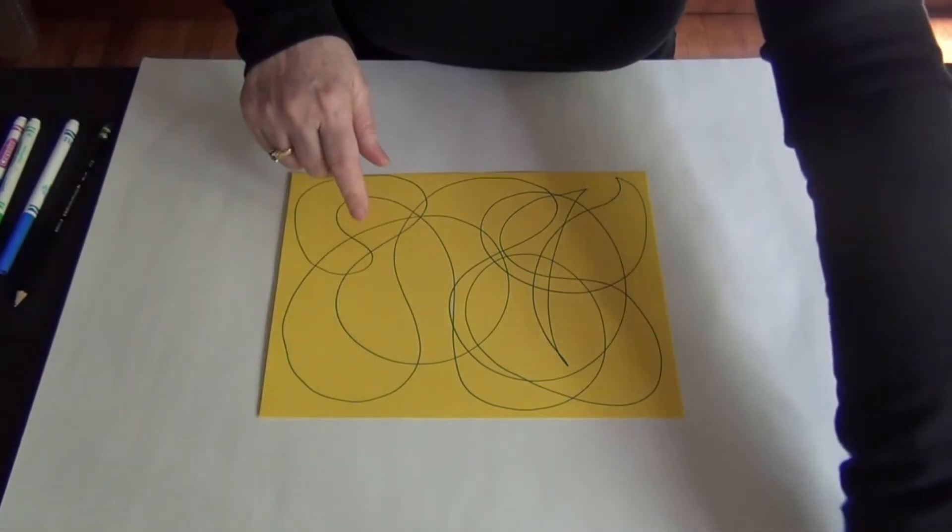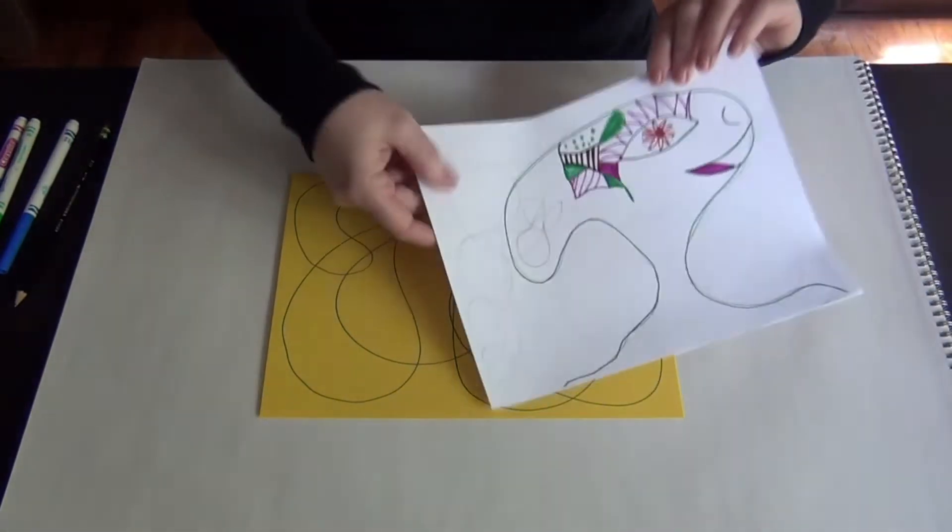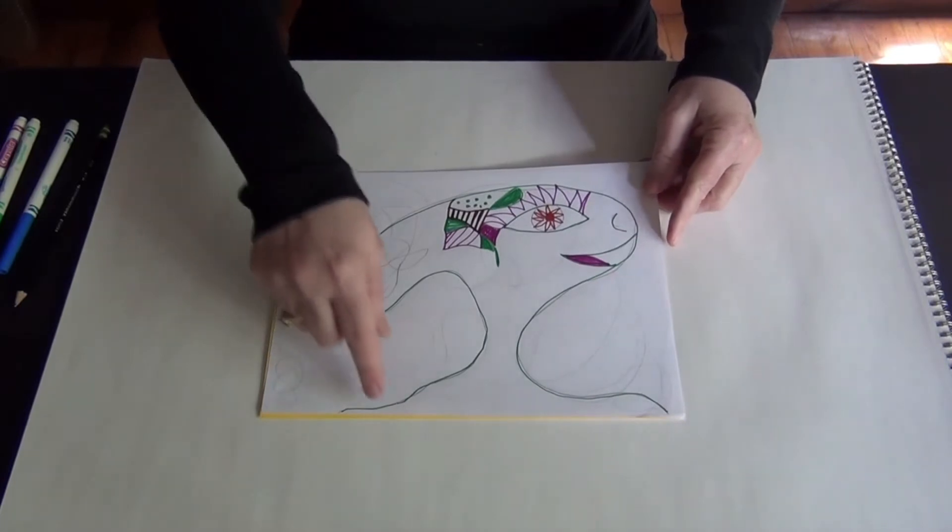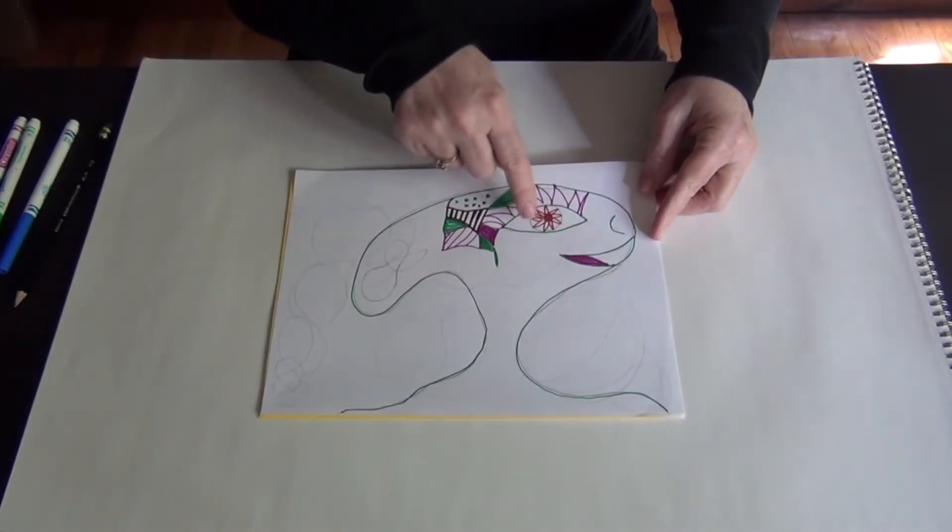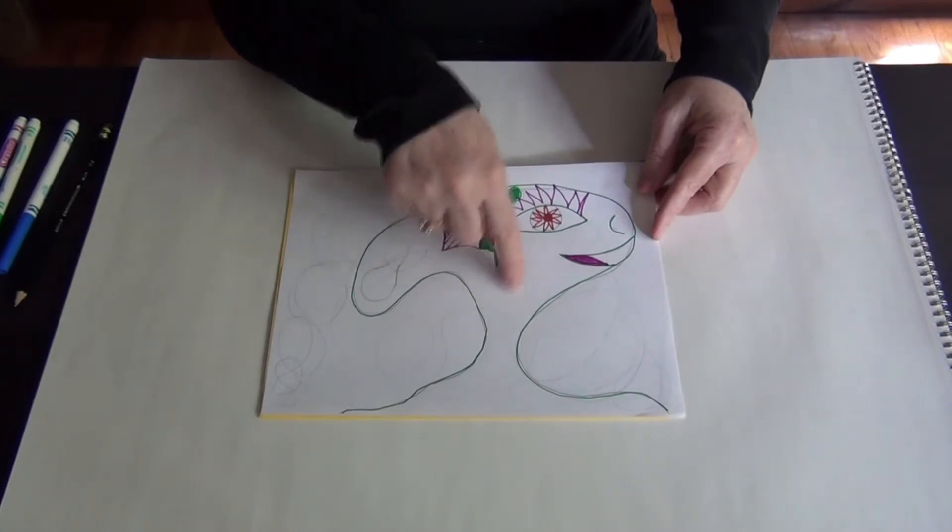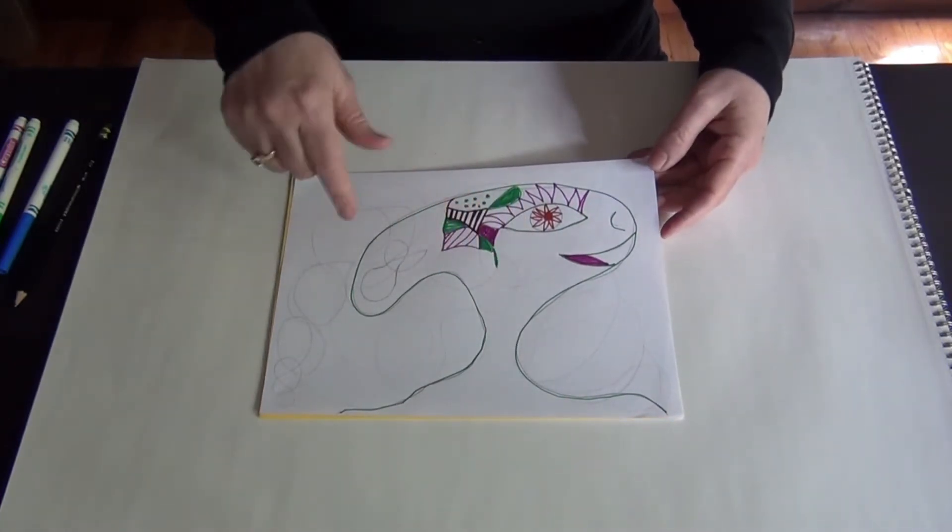One of the ones I made sort of looked like a hedgehog and I emphasized these lines that were around here and then added the eye and then started coloring different little areas. You can kind of see the different abstract areas they're colored in.